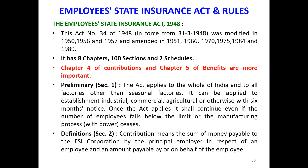The act covers eight chapters, 100 sections, and two schedules. From the safety officer's and industrial point of view, the important chapters are Contributions and Benefits — chapters 4 and 5. Section 1, the preliminary part, states this act applies to the whole of India and to all factories other than seasonal factories. It can also be applied to establishments — industrial, commercial, agricultural, or otherwise — with six months' notice.